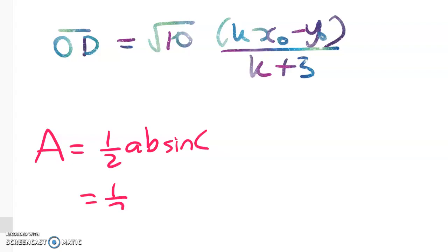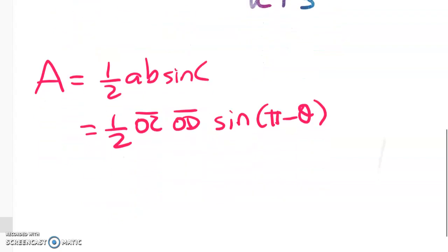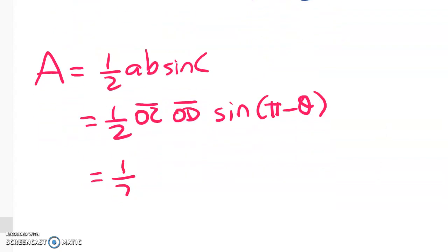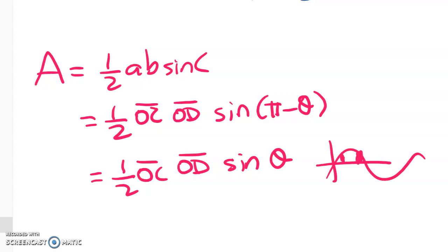And we want ½ times OC times OD times sin(π - θ). If you've watched this far, you almost certainly know that sin(π - θ) is the same as sin θ, just by the symmetry of the graph. We've got this point and this point. We know that that's 0.6. So here we've got 0.3 times OC times OD.